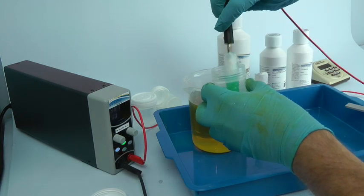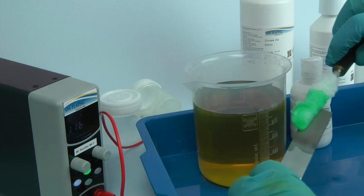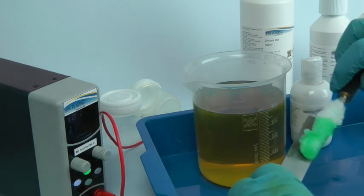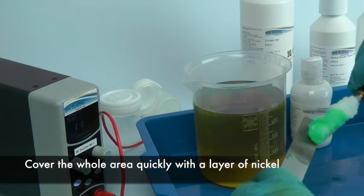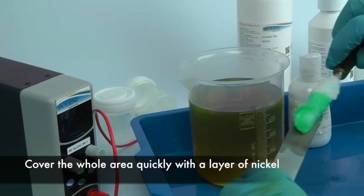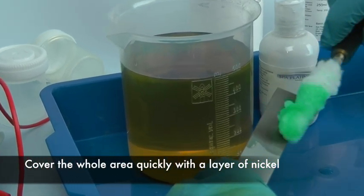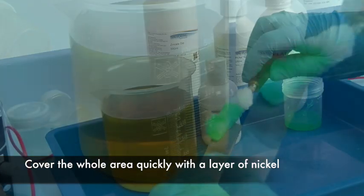Start brush plating with the gel nickel solution with regular circular strokes. Try to cover the whole area with a layer of nickel as soon as possible. Once you have done this, you can then build up a thicker layer with further plating.